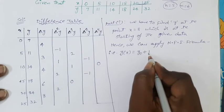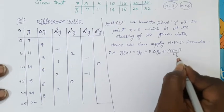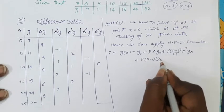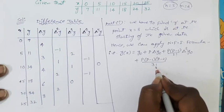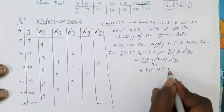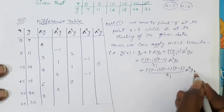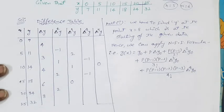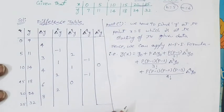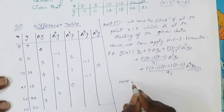Newton's forward interpolation formula is: y(x) = y₀ + p·Δy₀ + p(p−1)/2! · Δ²y₀ + p(p−1)(p−2)/3! · Δ³y₀ + p(p−1)(p−2)(p−3)/4! · Δ⁴y₀. Note that Δ⁵y is 0 here, so the next term is not needed. Take this as equation 1. Now find the p value using p = (x − x₀)/h.